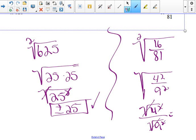That's going to equal, out here, positive, negative 4 over positive, negative 9. So it's just positive and negative 4 ninths. And that's all there is to that.